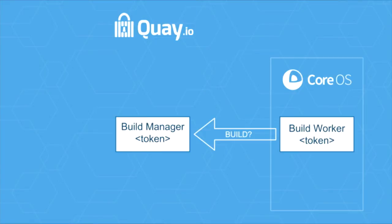If there is a build available, the build manager will start a machine, and on that machine it will put a secure token. Later on, that machine will use the secure token to authenticate with the build manager — this is the cloud equivalent of logging into that machine — and it will be given the parameters needed to do the build. Once the machine comes up and processes start, it asks the manager: how about that build you started me for? Give me the build now.